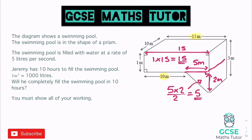We've got the area of the rectangle as 15 and the area of the triangle as 5. Adding those together gives us a cross-sectional area of 20. To get the volume, we multiply that by the depth — in the case of a prism, how far the cross-section goes through the shape — which is given as 10 metres. So 20 times 10 gives us a volume of 200 metres cubed.